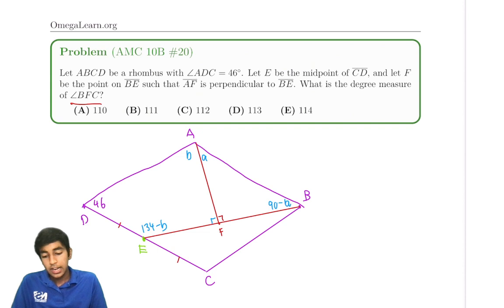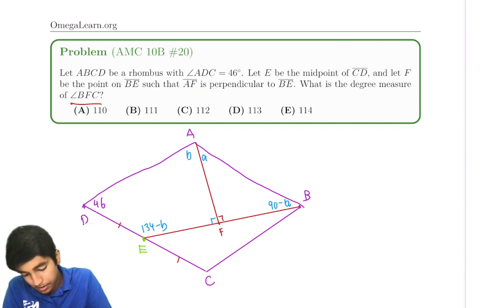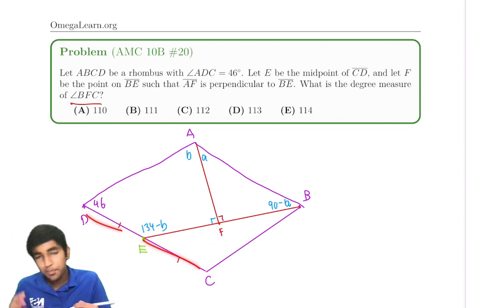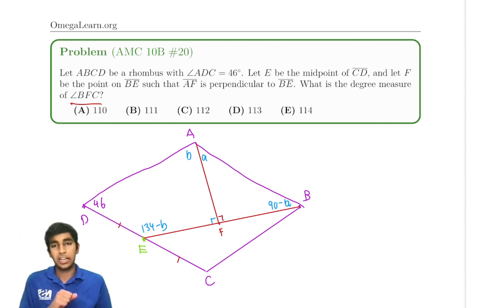This will not give you enough information to find BFC. Because it's very hard to use this midpoint condition. Like this midpoint condition is the weirdest thing. And it's kind of the goal of the problem.